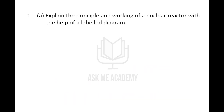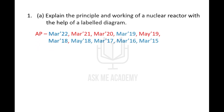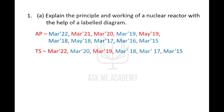In these papers, the most repeated question is: explain the principle and working of a nuclear reactor with the help of a labelled diagram. This question was asked in AP from all 10 papers we are seeing — every time it was repeated. For Telangana, out of 7 papers, 6 times this question was repeated. I have marked them in blue and red color. Blue color means only this question was given for total 8 marks. Red color means they have given one more sum to solve, which together makes it an 8 marks question.